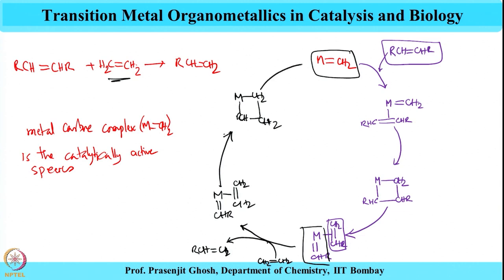The metallocyclobutane species finally gives the metal carbene along with formation of the metathesis olefin. As the new olefin is produced, a different metal carbene active species is also formed. In the presence of a second olefin, it replaces the coordinated olefin, and the new metal carbene undergoes metathesis to form another metallocyclobutane, which gives the metathesis olefin. Different carbenes and olefins are formed from the two reacting starting olefins.